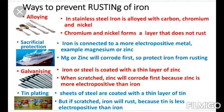Next is sacrificial protection, where iron is attached to a more electropositive metal like magnesium or zinc, which prevents rusting. Another method is galvanization. In galvanization, a layer of zinc is applied to iron or steel sheets, equipment, or tools. In large industries, zinc is kept in a molten state in chambers. Iron articles are dipped into the molten zinc, so zinc makes a layer on the iron articles.